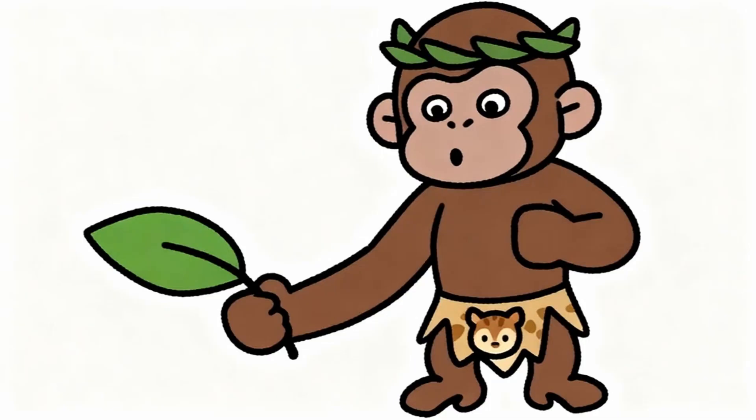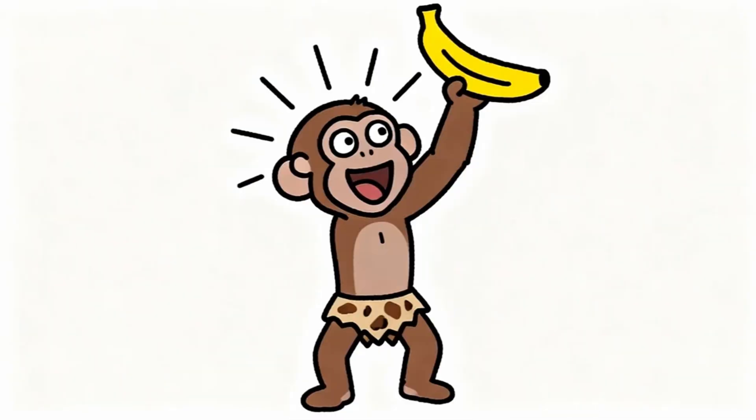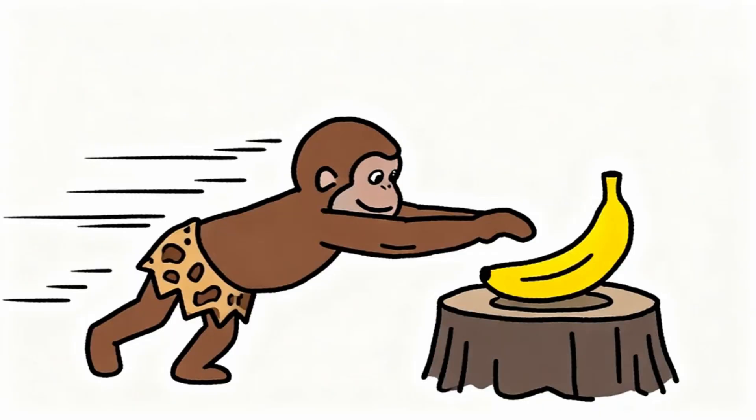Monkey lives in forest. Life is hard. Monkey must climb tall trees, fight other monkeys, and search for hours just to find one sweet banana. When monkey finally gets banana, brain releases dopamine. This chemical makes monkey feel amazing. Dopamine tells monkey brain this banana thing is important for survival. Remember this feeling. Do this again.